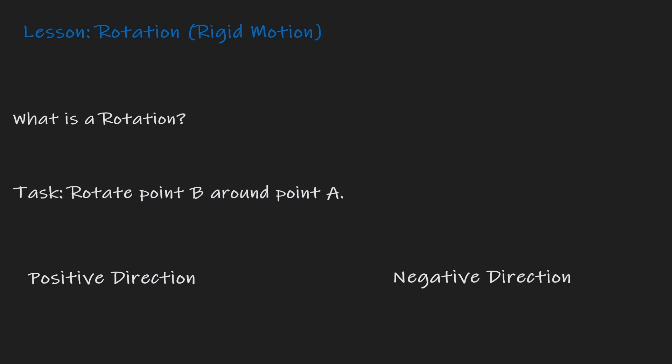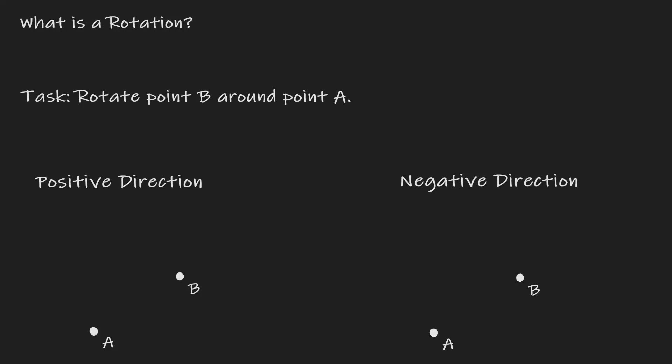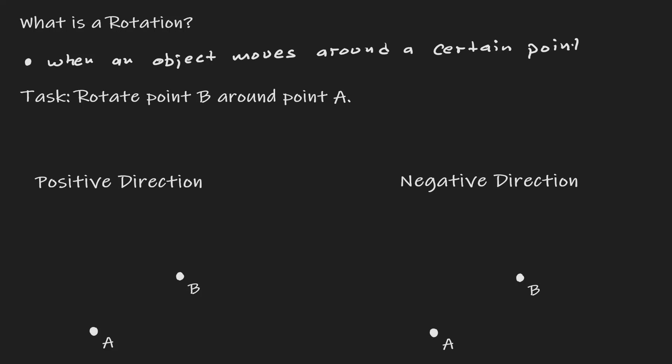Welcome. Today we're going to talk about the rigid motion of rotation. Let's start by answering the question: what is a rotation? We can say that a rotation occurs when an object moves around a certain point, and this point that we're moving around, we call it the point of rotation.